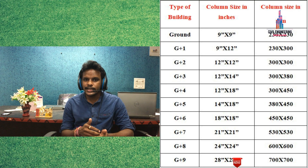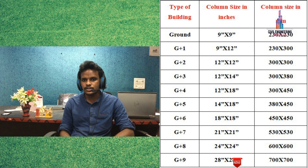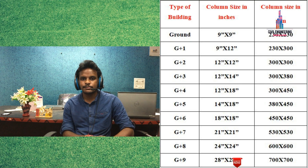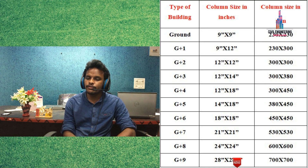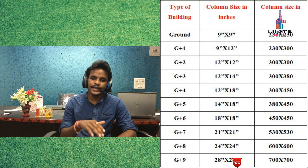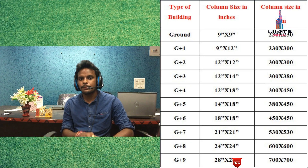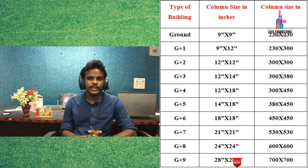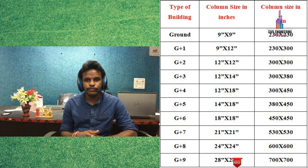For a G+7 building, the minimum column size is 21 inches cross 21 inches, approximately equal to 530 mm cross 530 mm. For a G+8 building, the column size is 24 inches cross 24 inches, which is approximately equal to 600 mm cross 600 mm.